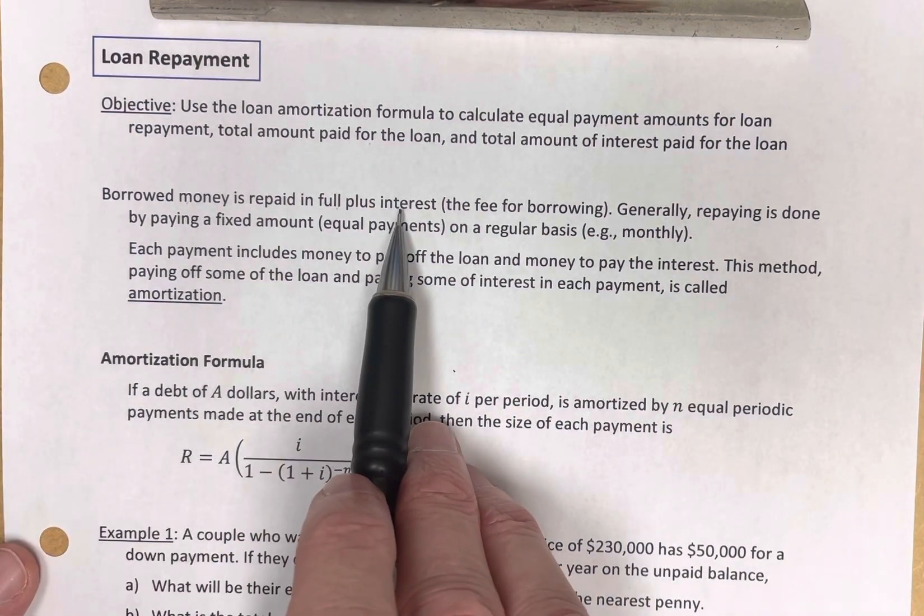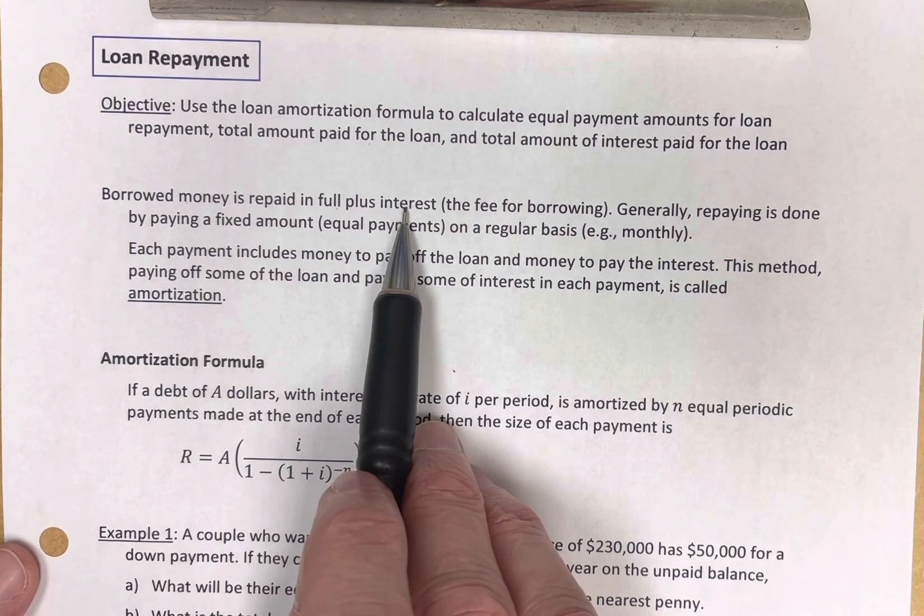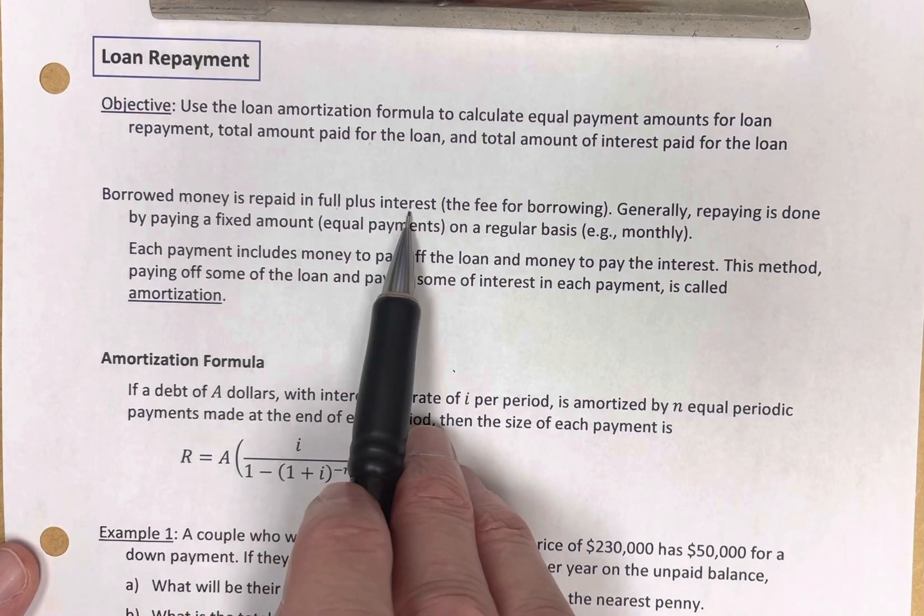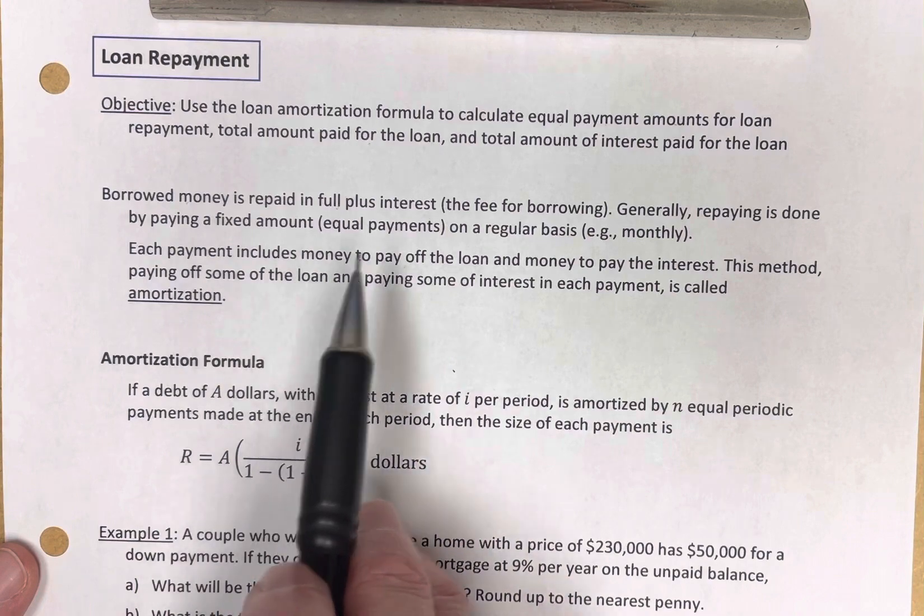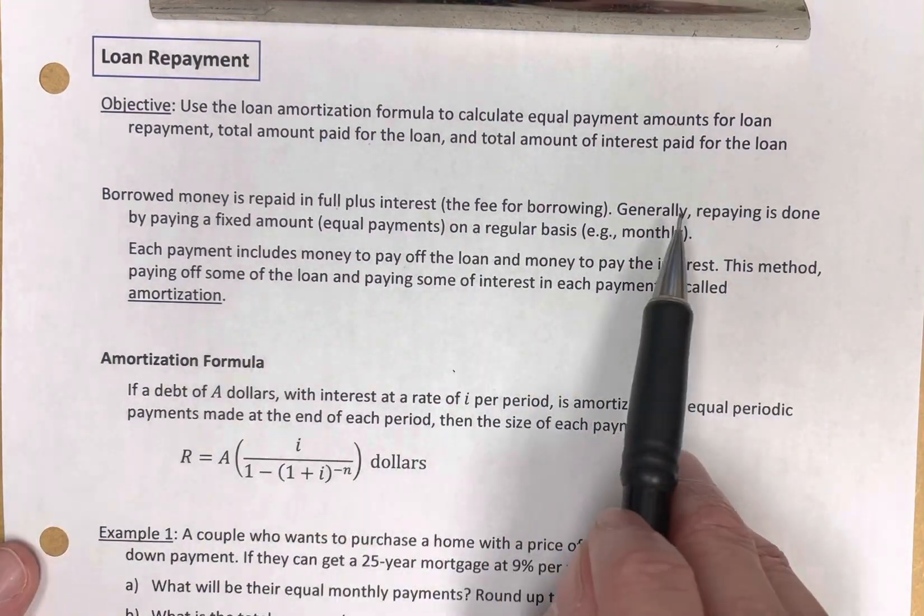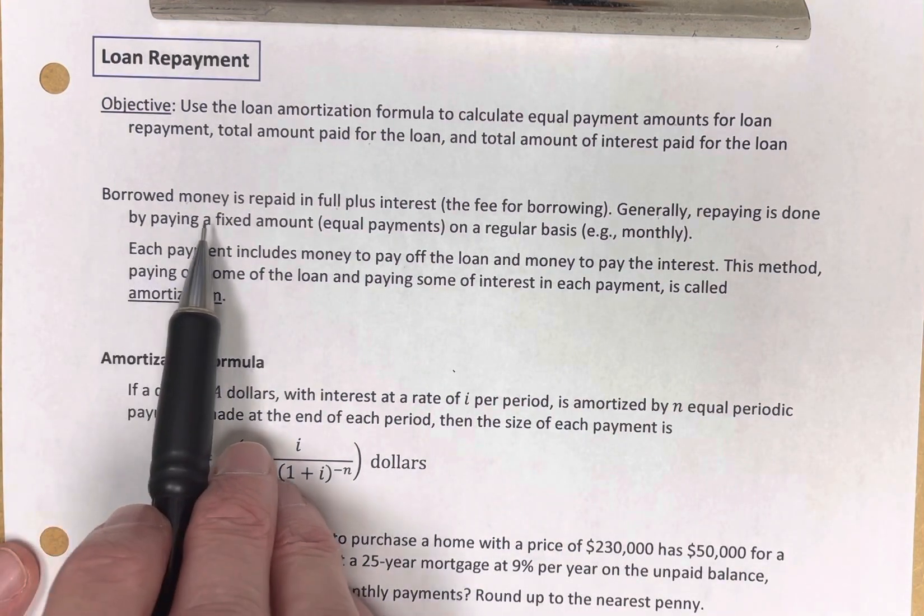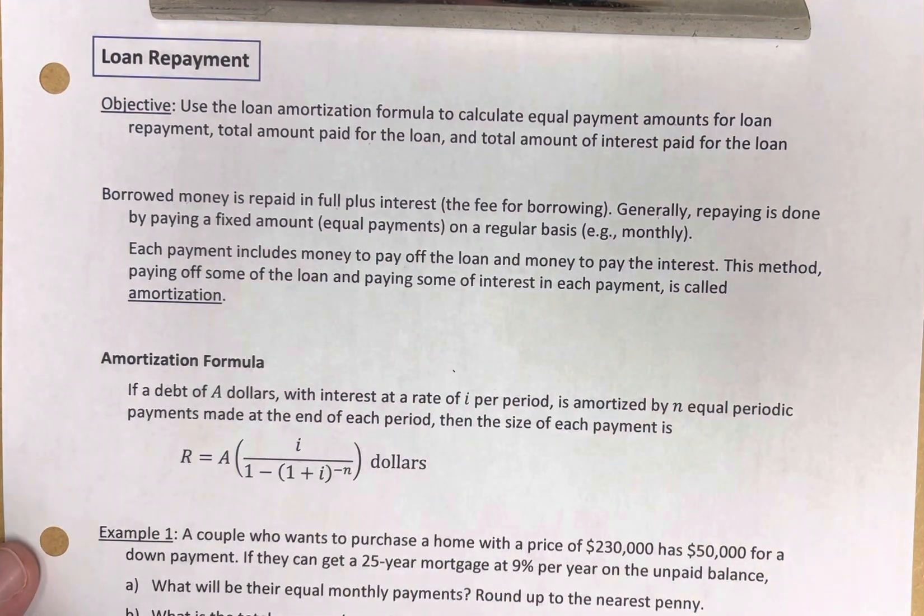So if I borrow $100 from the bank, and I agree to pay them back, let's say in one month, I'm going to pay them back the $100, because that was the amount I borrowed, plus I'm going to pay them back a little bit of interest, which is the fee for borrowing. In general, when you repay, you do that by paying a fixed amount equal payments on a regular basis, and it's often monthly.